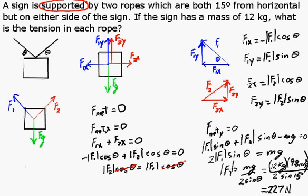F1 and F2 have the same value, so both tensions, the tension in both strings is 227 newtons.